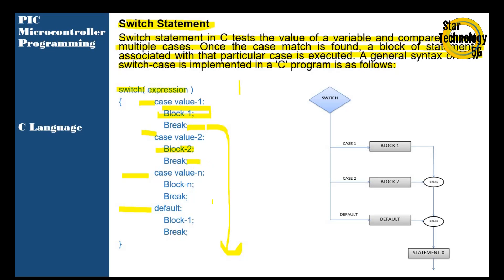You can also see in this picture: switch starts, case one matches — it will execute this block and exit. If case two matches, it will execute that block and ignore the others, then break and exit from the switch statement.